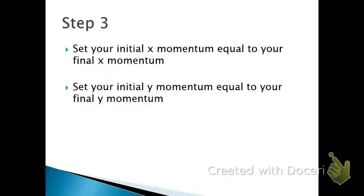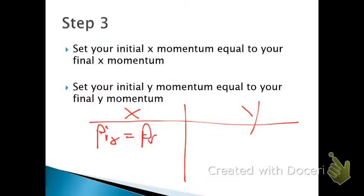So when I'm going through these two-dimensional problems, I usually divide my sheet into two, have an x section and a y section, and in each of these, treat it like their own conservation of momentum problem, but only look in that specific direction. So p initial x equals p final x, p initial y equals p final y.